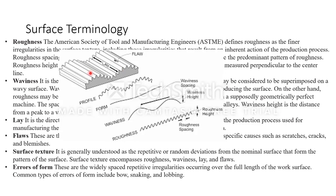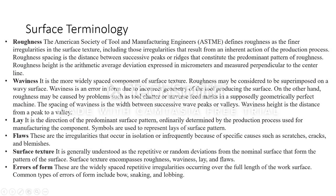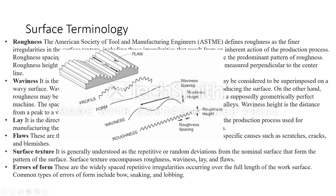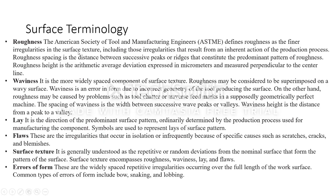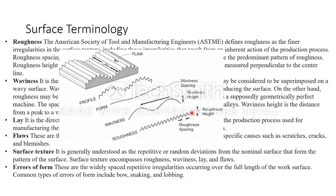The spacing of roughness — if you see the definition — roughness spacing is the distance between the successive peaks or ridges that constitute the predominant pattern of roughness. From peak to peak, either positive peak to positive peak or negative peak to negative peak, is the roughness spacing. The height is measured from the starting point to the peak — the arithmetic average deviation expressed in micrometers, measured perpendicular to the central line, which is exactly a symmetrical line between the upper and lower peaks.